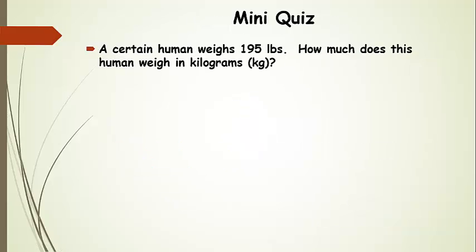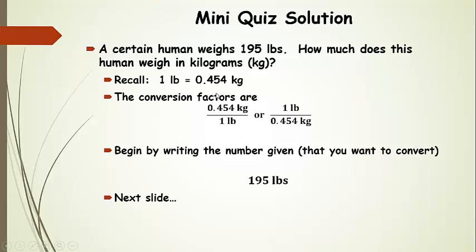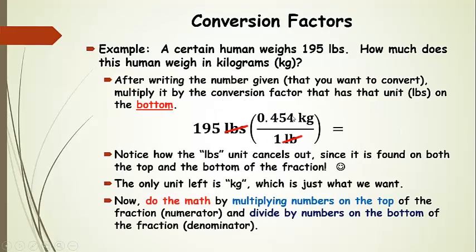Now you try one. A certain human weighs 195 pounds and you want to convert that weight into kilograms. Going back to our conversion factor: one pound is equal to 0.454 kilograms. We write two conversion factors, and we start by writing down the number we want to convert — 195 pounds. We want the conversion factor with pounds on the bottom, so we'll use 0.454 kilograms on top and one pound on the bottom.